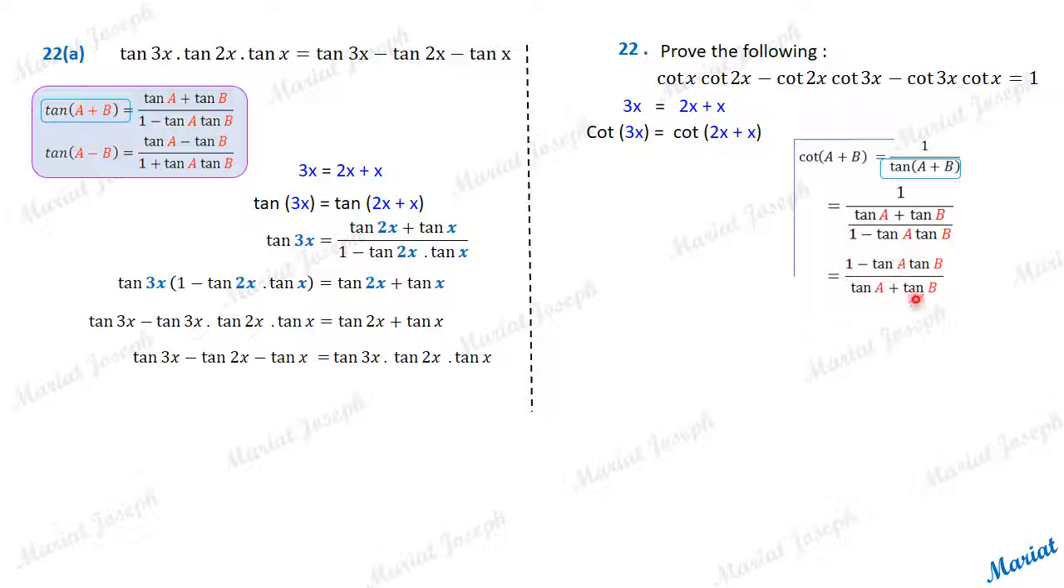So I am going to change all these tan functions into cot functions by writing as reciprocal functions. Tan a is 1 by cot a, tan b is 1 by cot b. Going further, LCM, cot a cot b is the LCM. Numerator is cot a cot b minus 1 upon cot a cot b. Denominator here is cot b plus cot a. So we have got a formula for cot a plus b now. Cot a plus b is cot a cot b minus 1 upon cot b plus cot a.